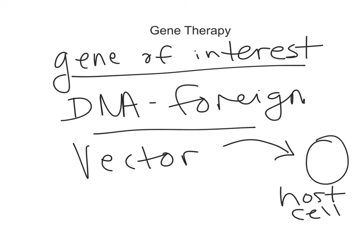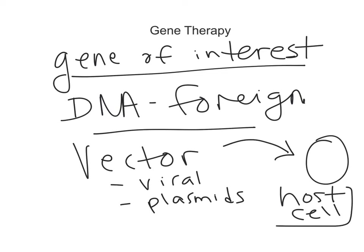So what is the vector? We've looked at viral vectors, and we also said that plasmids could be vectors. The next article you're going to look at is actually neither of these — it's something new. The final question is: what is the host cell? Generally speaking, this host cell is going to have something wrong with it, and the goal is to insert that gene of interest and fix that cell.